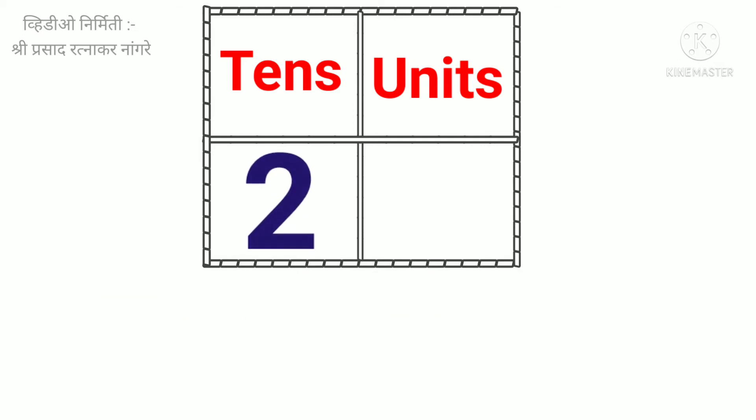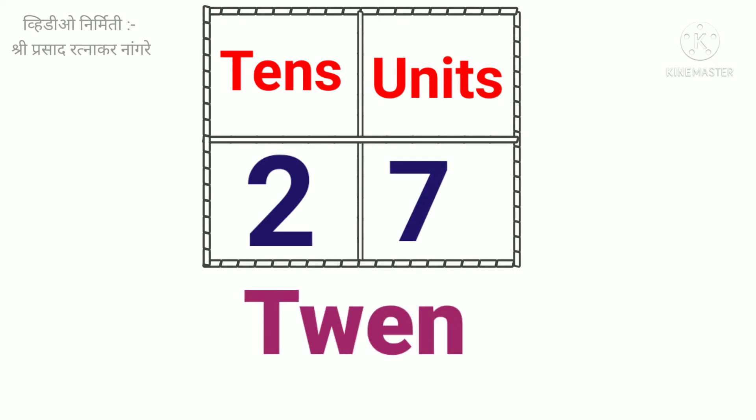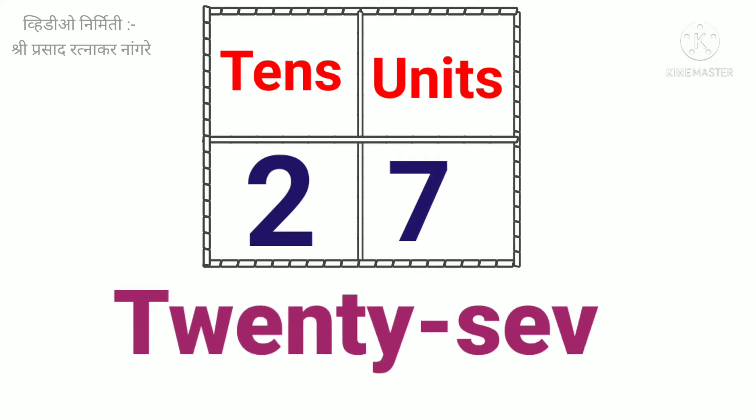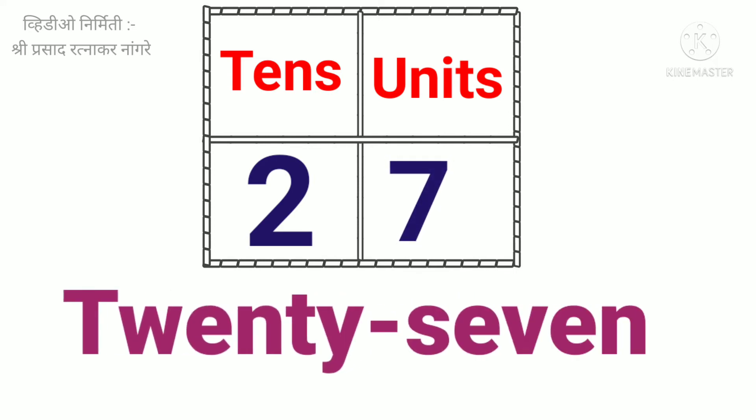Two tens. Seven units. Twenty-seven. T-W-E-N-T-Y-S-E-V-E-N. Twenty-seven.